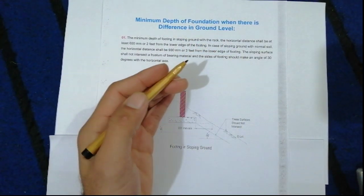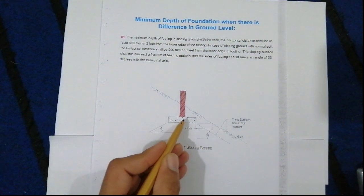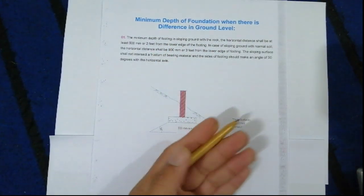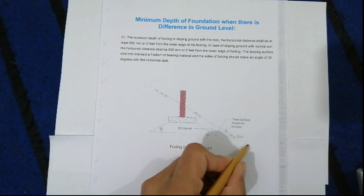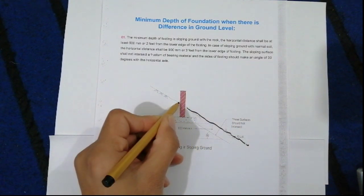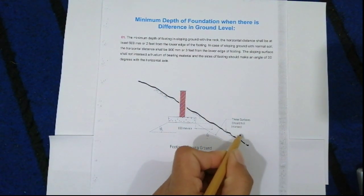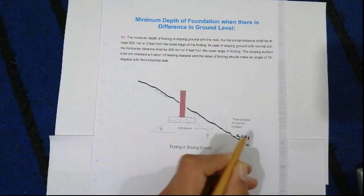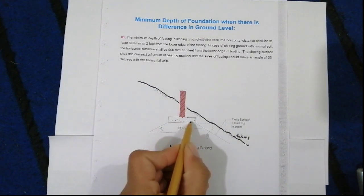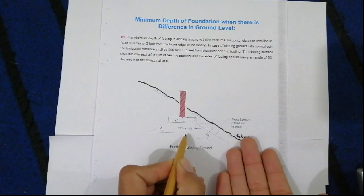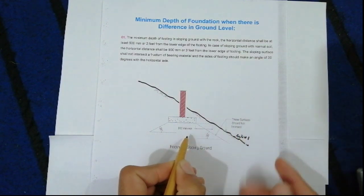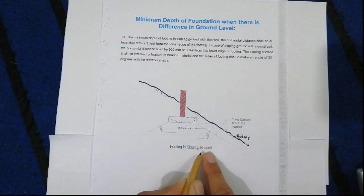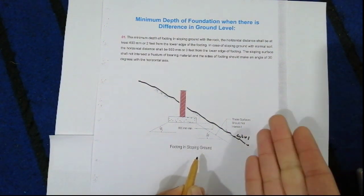This is a very important topic in civil engineering. As you can see, this picture shows the minimum depth of foundation when there is a difference in ground level. Here is a difference in ground level, and this is the footing. So what should be the depth of foundation when there is a difference in ground level — footing on sloping ground?